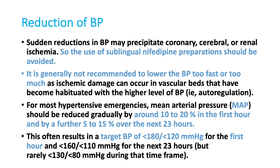You can reduce a maximum of 30 to 35 percent of the target BP in the first 24 hours. We can also set specific target blood pressures: BP should be less than 180/120 mmHg in the first hour, and less than 160/110 mmHg in the next 23 hours. These targets should be set and treatment titrated accordingly.